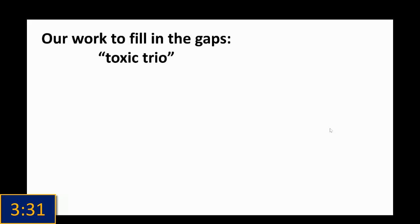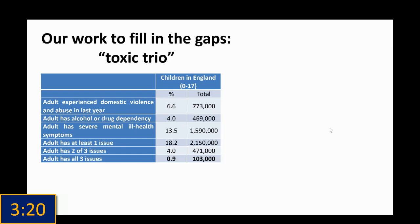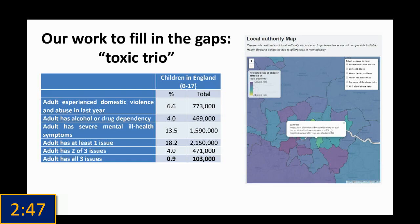One example of how we're trying to fill in these gaps is on the toxic trio. We've used survey data which asks adults about all three issues and whether they have children in the household in order to produce our own estimates — which we believe are the first national estimates of the numbers of children living in households where these issues are present. We estimate that about 2.1 million children live in a household where at least one of these issues is present, and 100,000 children live in a household where all of these issues are present.